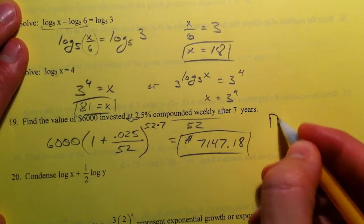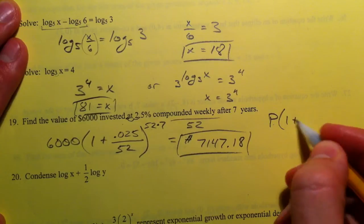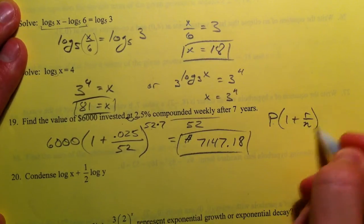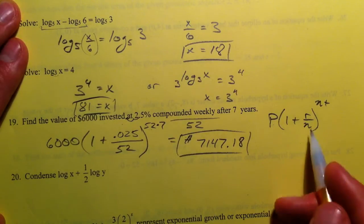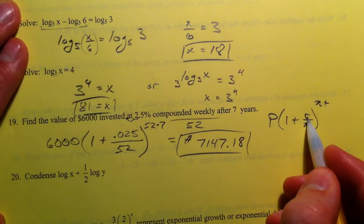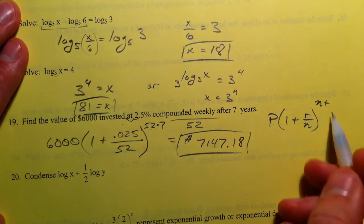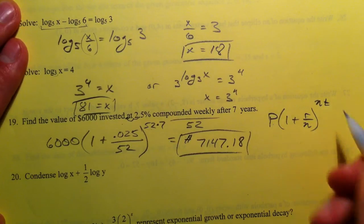That's coming from p times (1 + r/n)^(nt). n was the number of compoundings, r was the interest rate as a decimal, and t was the time in years.